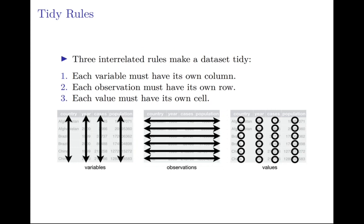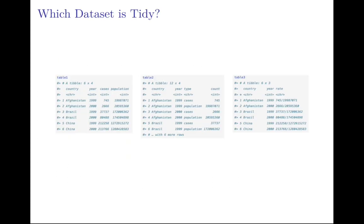So what are the tidy rules? To have a tidy data set, there are three rules that your data must meet and they're interrelated. The first is that each variable must have its own column. The second is that each observation must have its own row. And the last one is that each value must be in its own cell. Let's take a look at these three data sets again and tell me which one of these tables is the tidy one. If you guessed table one, you're correct - that's the tidy data set. Here you can see that each variable is a column: country, year, cases, and population. Each observation, which is a country within a year, is a row, and the data are in the cells, and those are your values.